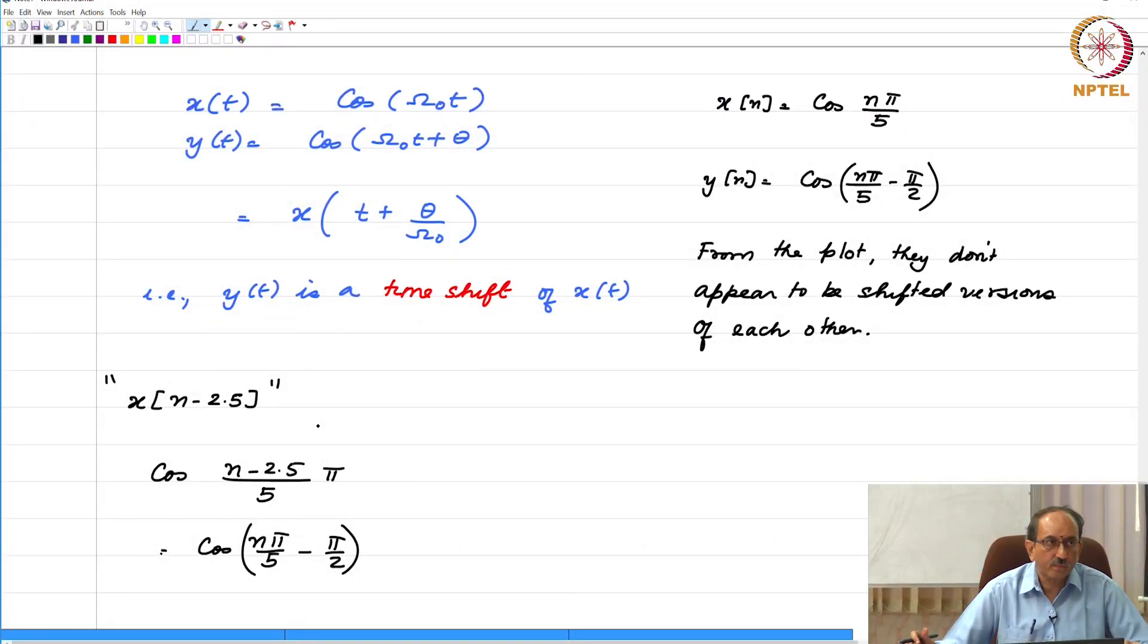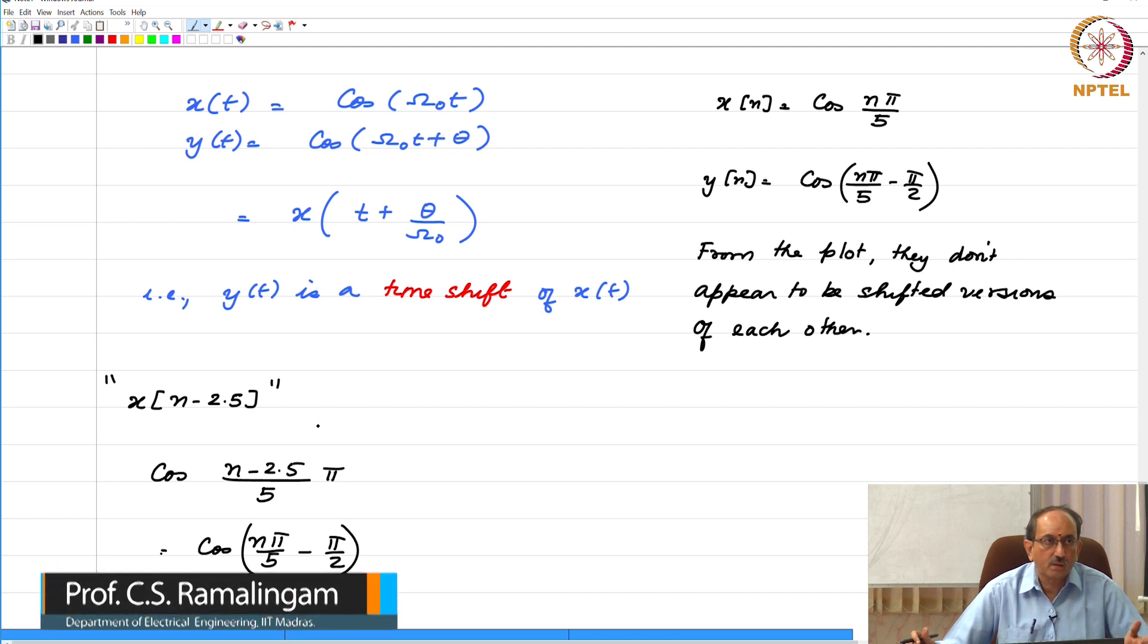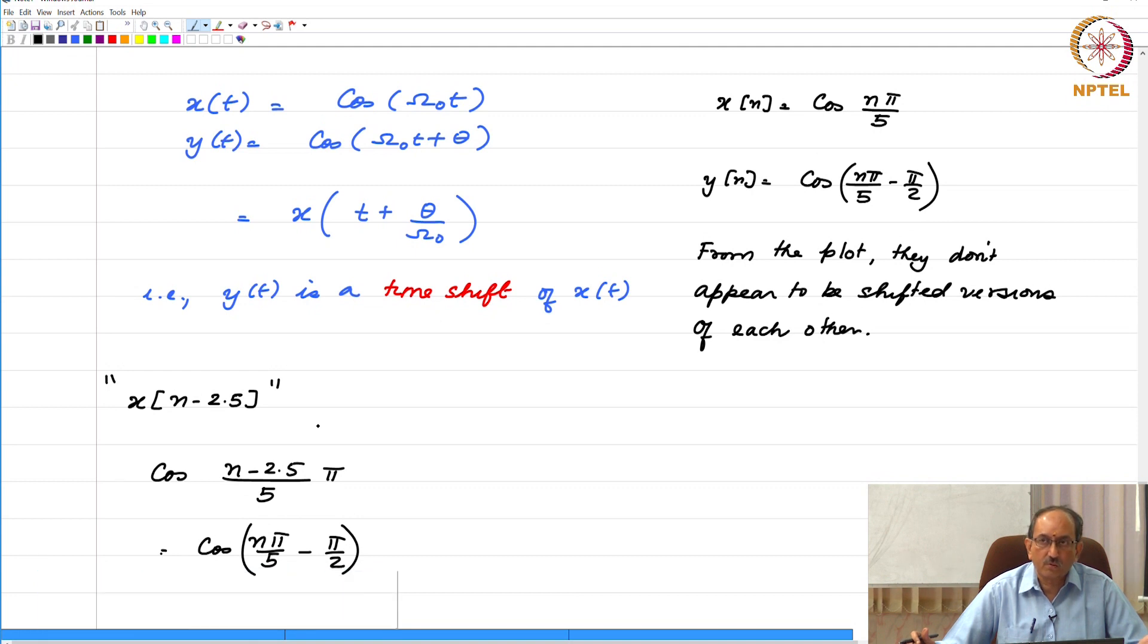Now, let us move on to systems. Again, this will follow a very similar path compared to continuous time systems. So, we are going to define what a system is, what the system properties are, and then later we will focus on one particular subclass, namely the class of linear time invariant systems, exactly what happened along the lines of signals and systems.